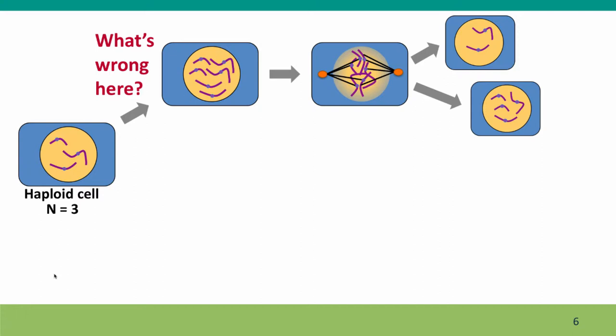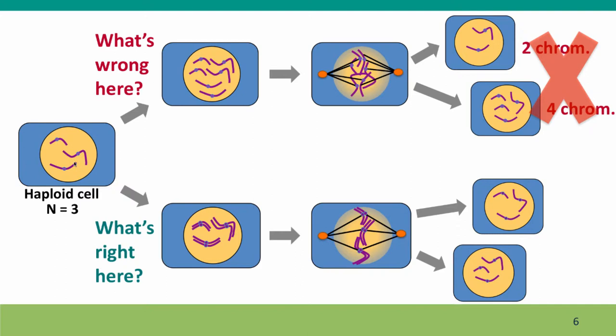Here's a drawing of mitosis that's wrong. What's obviously wrong is that the daughter cells are not identical to each other and not identical to the parent cell — one daughter cell has only two chromosomes, the other has four, but the parent cell had three. Here's mitosis drawn correctly: each daughter cell has three chromosomes, and not just any three — one each of the same chromosomes that were in the parent cell.